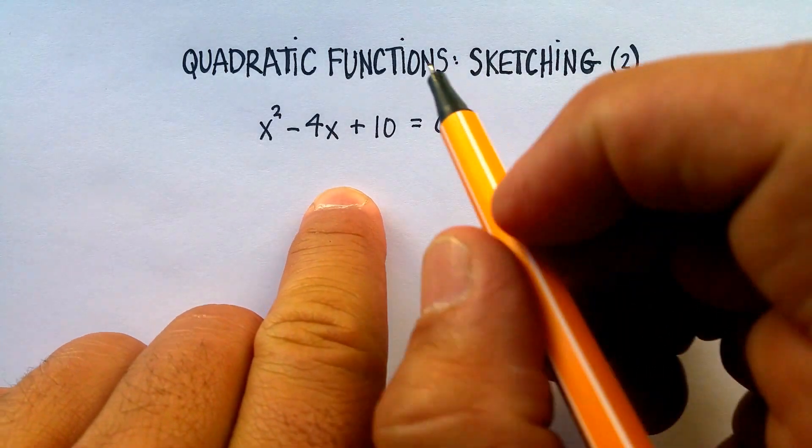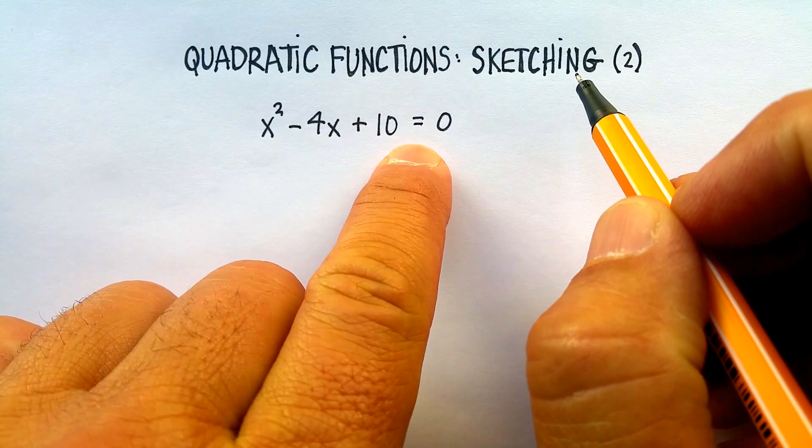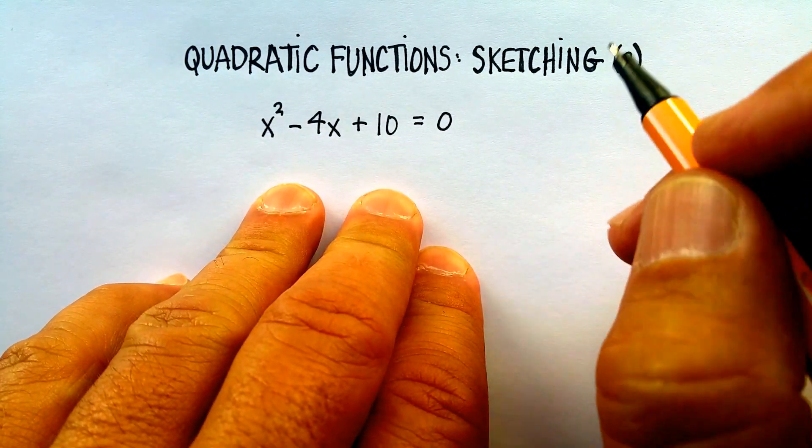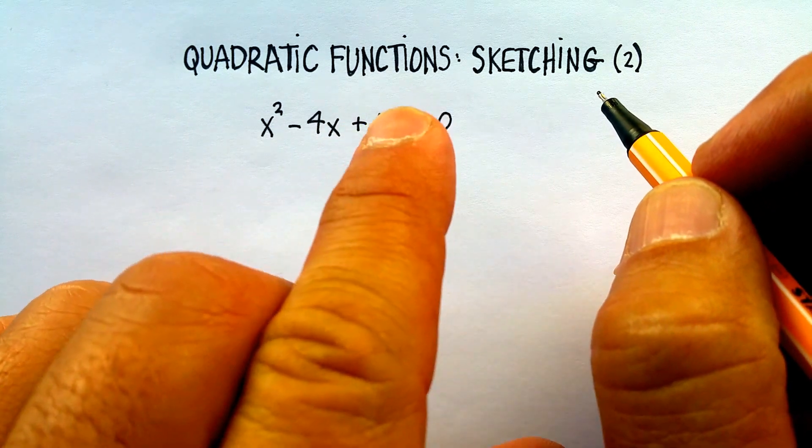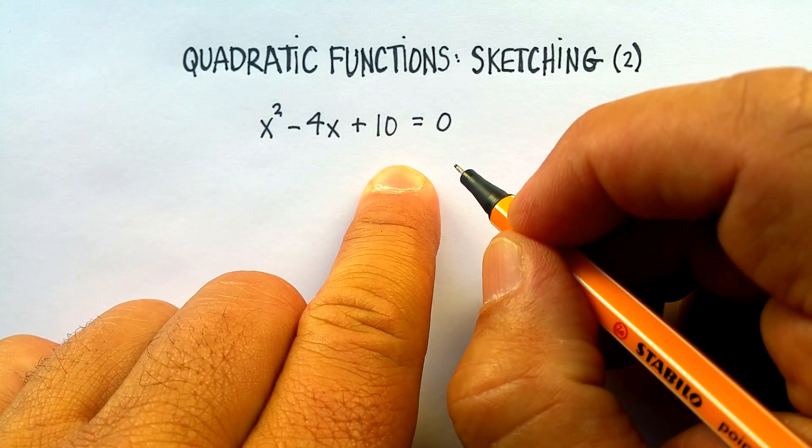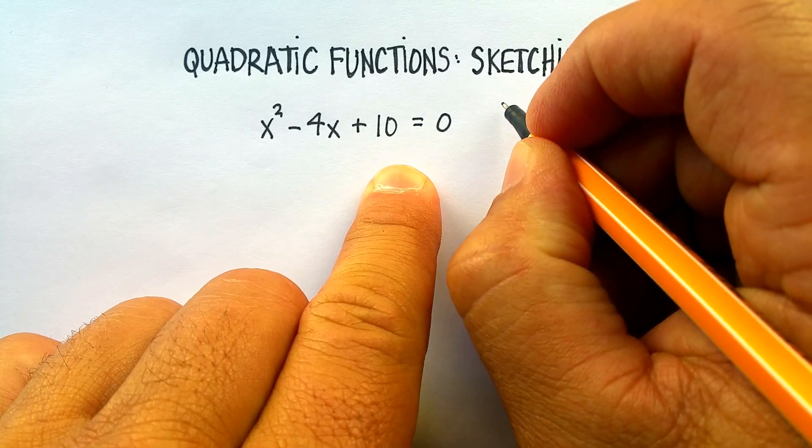In this video, we're going to learn how to quick sketch a quadratic function. By quick sketching, I mean that you're going to identify certain points of the parabola that's being created by the quadratic.